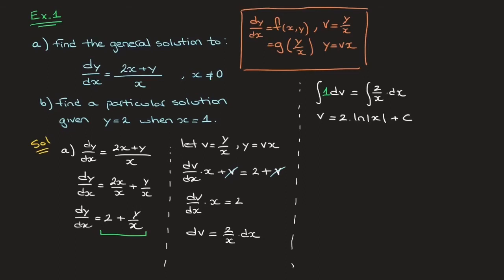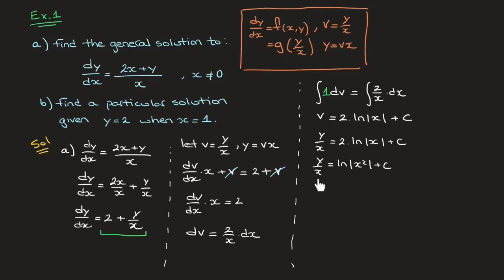Now that we've integrated, we can go back and write this equation in terms of y and x again. All we have to do is replace v by y over x. So that's y over x equals 2 times ln of the absolute value of x plus c. We can write this 2 as an exponent on the x inside the logarithm, so that's y over x equals ln of the absolute value of x squared plus c. Since x squared is always positive, we can get rid of the absolute value. Multiplying both sides by x, we obtain the general solution y equals x times ln of x squared plus cx.